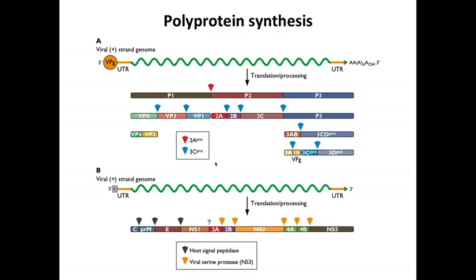Let's review polyprotein synthesis first. This is done by picornaviruses, shown at the top. The genome has a long open reading frame, it's translated into a long protein, and the protein is processed by two viral proteases to give all the final viral proteins. This is a very straightforward way to overcome the monocistronic restriction. This virus only has one mRNA — it doesn't make any subgenomic mRNAs — so it just makes a polyprotein.